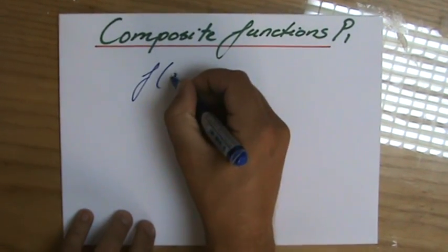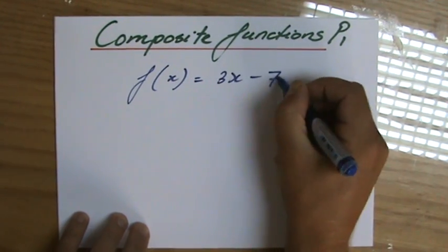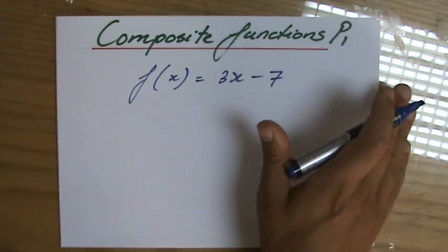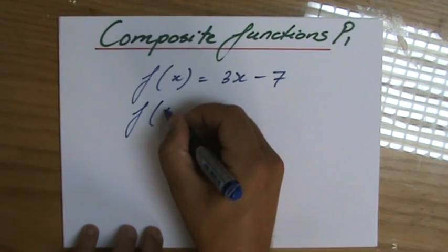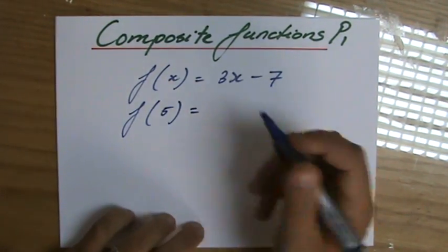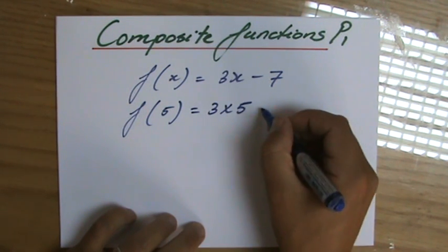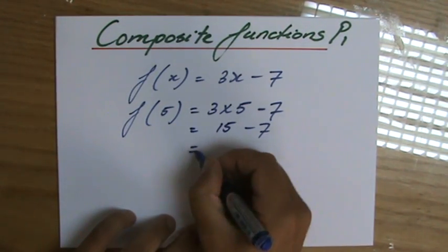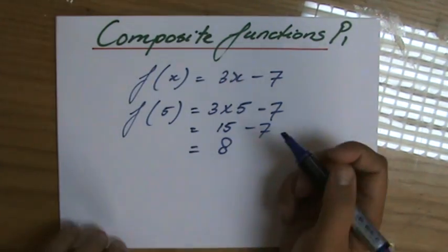I'd like to remind you of the following. If we have the function f(x) = 3x − 7, where x is the variable, we've evaluated functions before. For instance, what if we plug in 5 for x? We evaluate the function for x = 5, so we get 3 times 5 minus 7, which is 15 minus 7, and the answer is 8. Remember doing that?